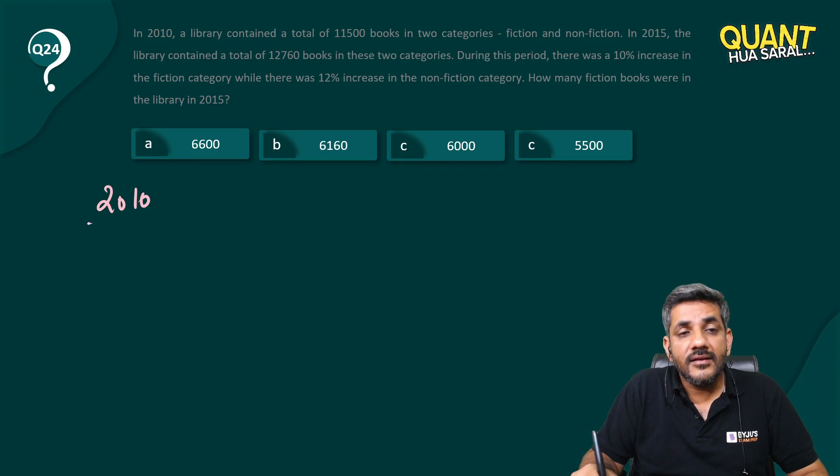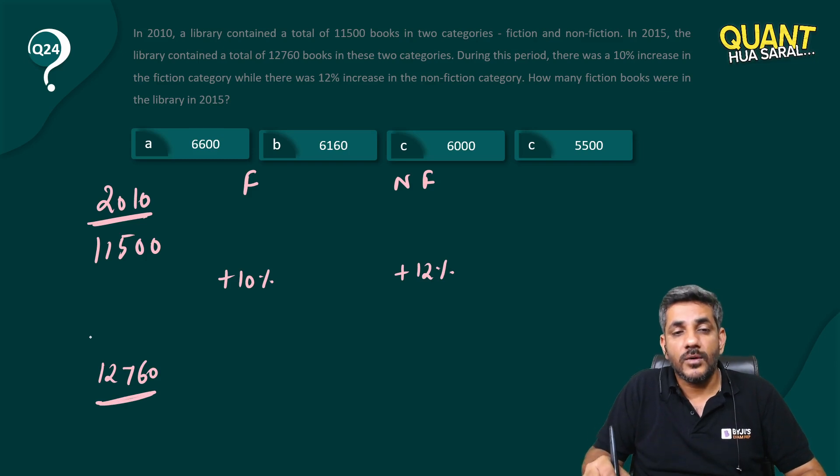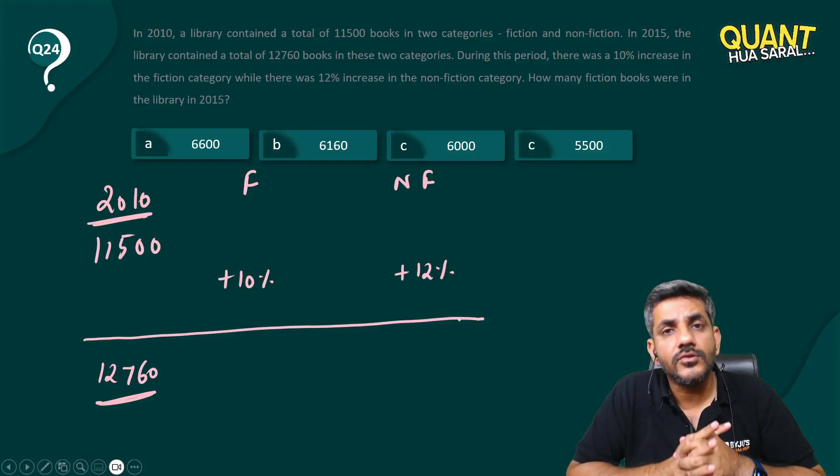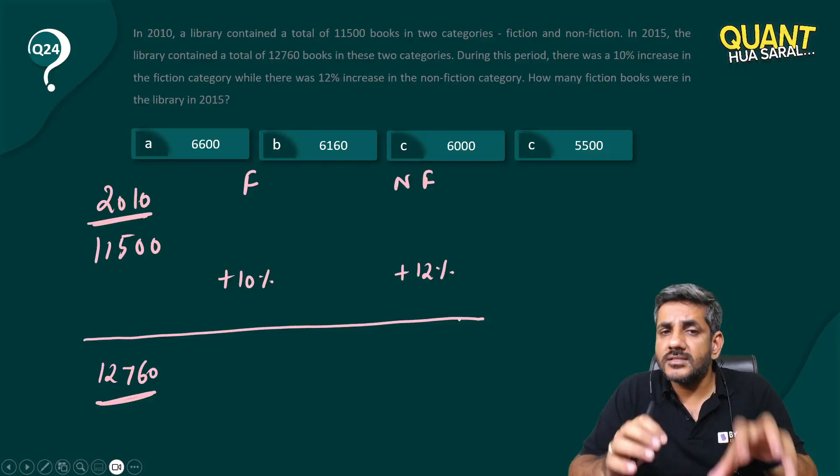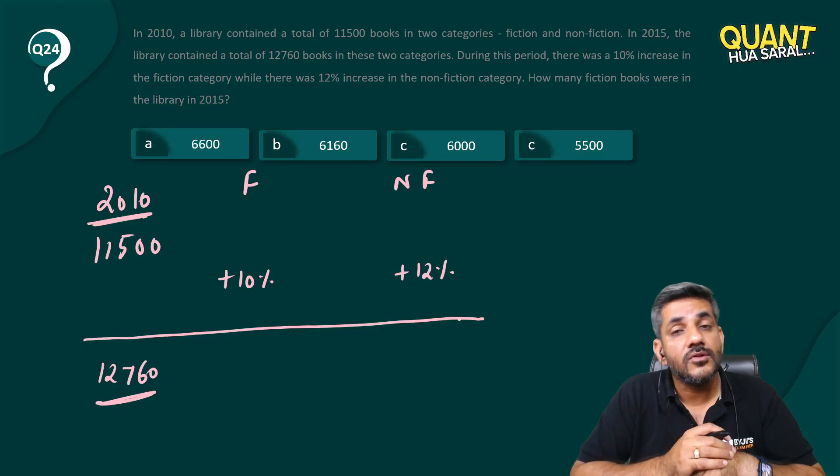In 2010, the total figure is 11,500. There are some fiction books. There are some non-fiction books. These books increased by 10%. These books increased by 12%. And now, the total is 12,760. The total now is 12,760. The question is asking you, how many fiction books were there? So what is the other logical method of solving this question? That is what I am going to discuss with all of you.